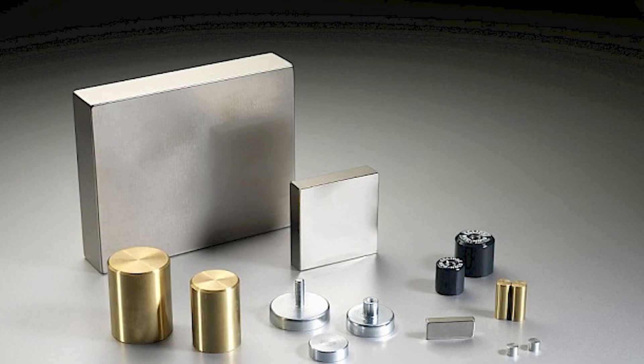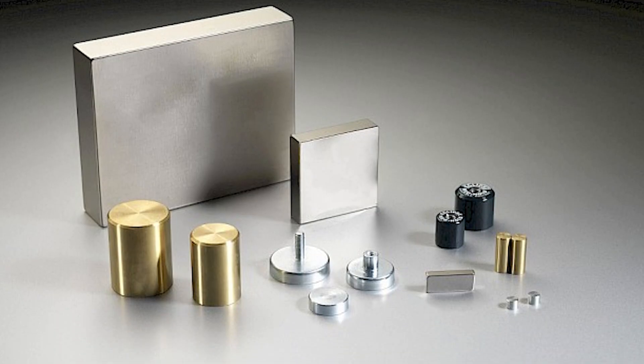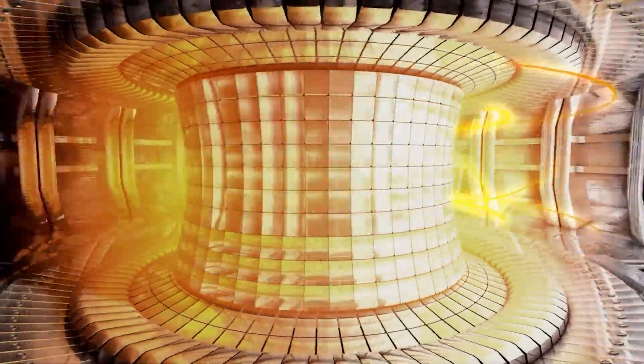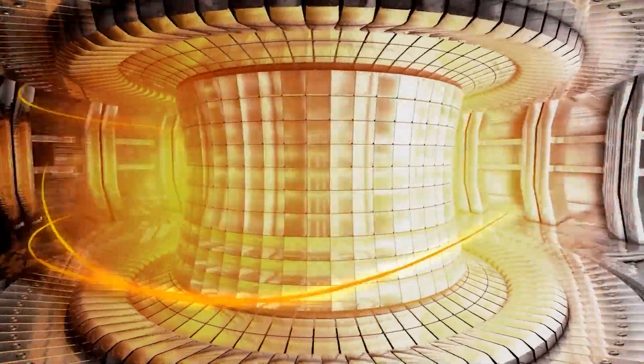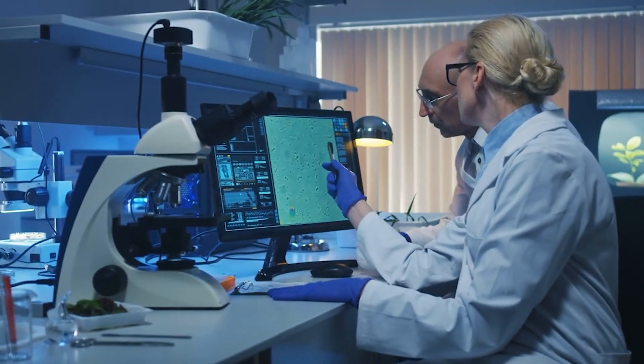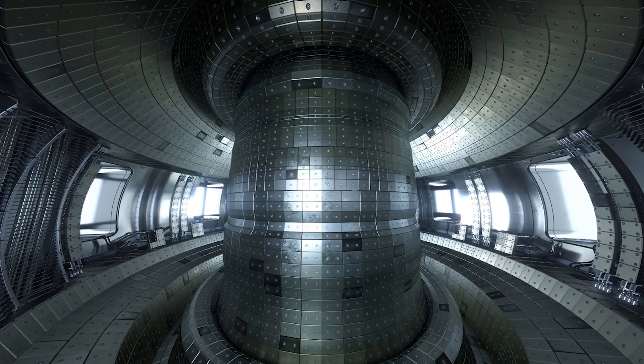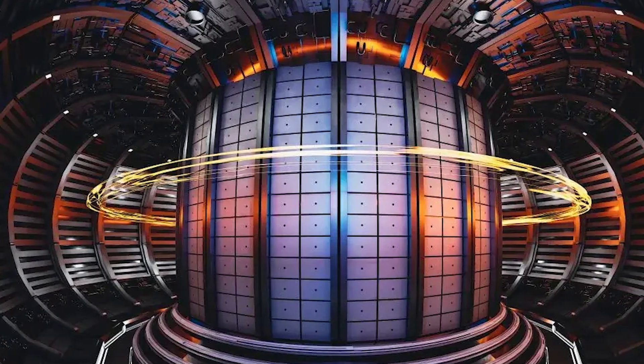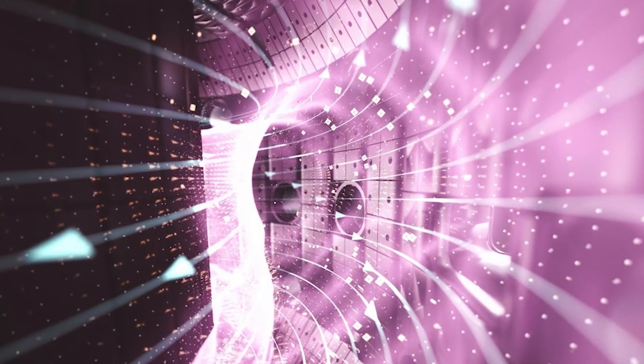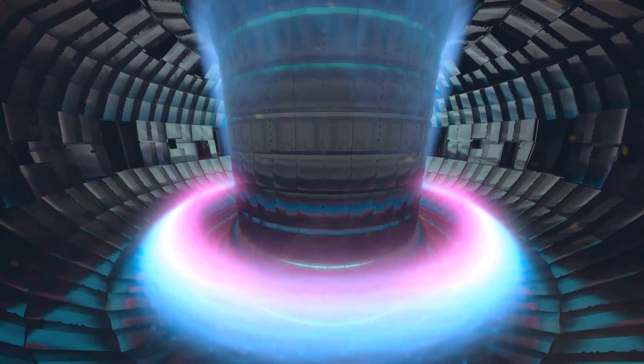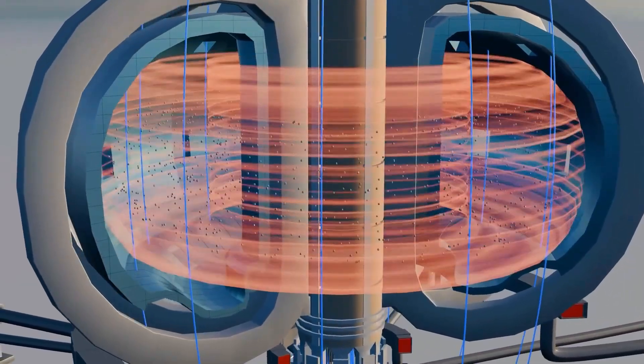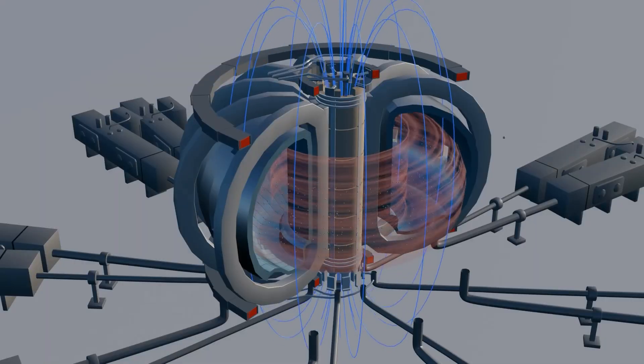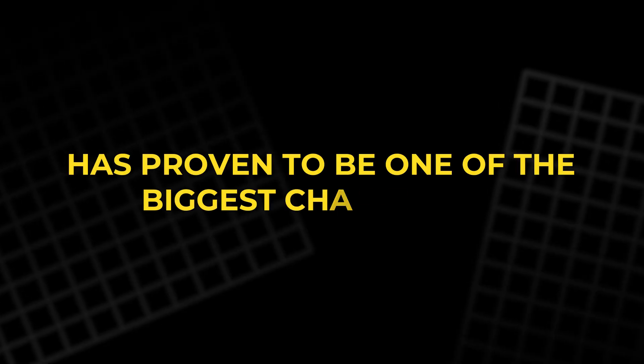Fusion Energy. While iron nitride magnets hold immense potential, the future of clean energy doesn't end with electric vehicles or wind turbines. The ultimate game-changer in energy production is nuclear fusion, the process that powers the sun. For decades, scientists have tried to replicate this process on Earth, and magnets are the key to making fusion a reality. Fusion reactors require powerful magnets to contain the superheated plasma created during the fusion process. To do this, scientists use tokamaks, donut-shaped reactors that employ magnetic fields to confine the plasma. But creating a strong enough magnetic field to contain plasma at the temperatures required for fusion has proven to be one of the biggest challenges.